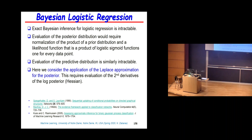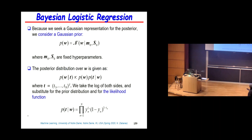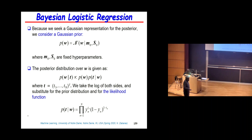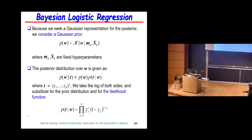Going from MLE estimates to a fully Bayesian framework takes some extra effort. In the model, the probability of C1 given X is the sigmoid of W-transpose X. In a Bayesian analysis, W becomes a random variable and we must assign a prior. We assign a Gaussian prior with mean M_0 and covariance matrix S_0.